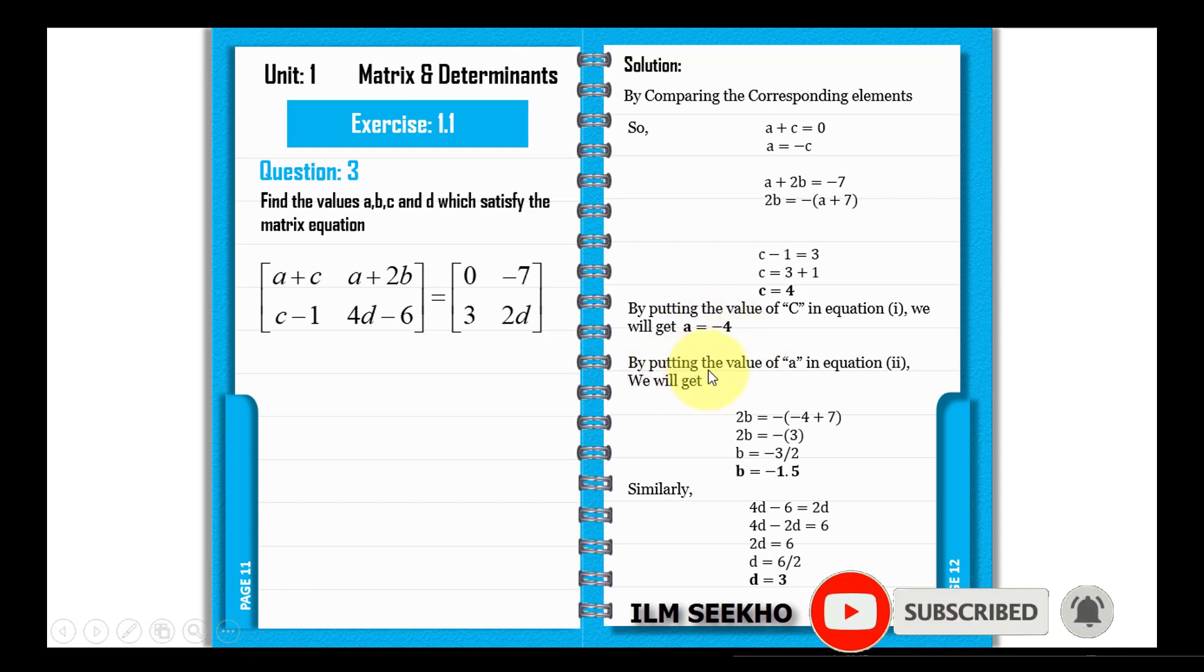By putting the value of a in equation 2, we get 2b equals minus a plus 7. So this is the value of a.